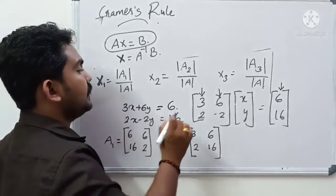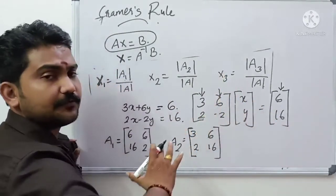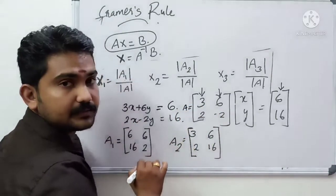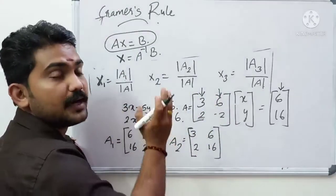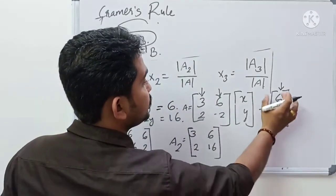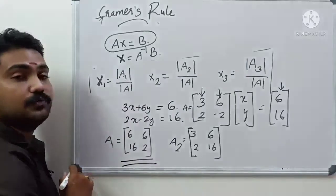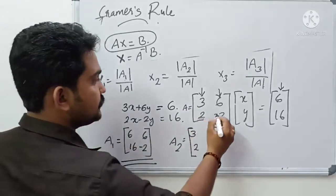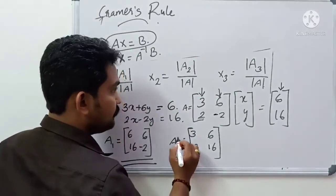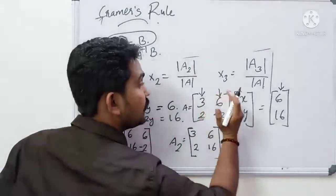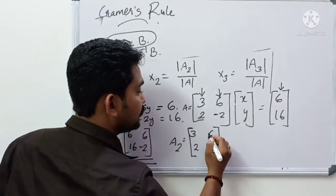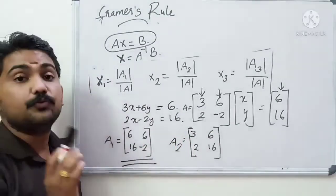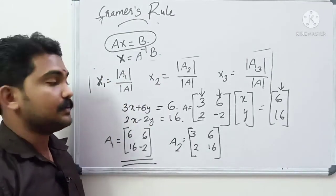We have a matrix and a format. We have constants 6, 6. We replace A1 and A2. For A1: first column is 6, minus 2; second values remain. For A2: first column is 3, 2; second column is 6, 16. This is A2. Now we have x1, x2 and we need to determine the determinants.